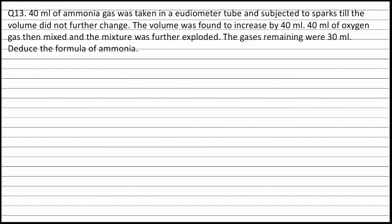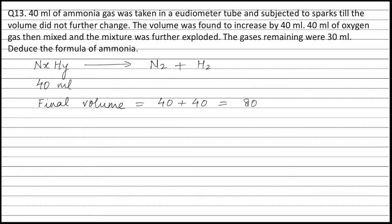Let the formula for ammonia gas be NₓHᵧ. When it is subjected to sparks it decomposes to nitrogen plus hydrogen. The initial volume of ammonia was 40 ml and after the reaction the increase in volume is 40 ml, therefore the final volume is equal to 40 ml plus 40 ml, which equals 80 ml. Under identical conditions, relative volumes represent relative number of moles.